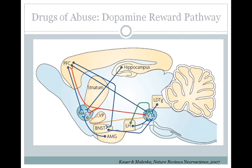Synaptic plasticity is involved in learning, memory, and other normal functions of your brain, but it is also involved in addiction to drugs of abuse. The main area of the brain that seems to be essential for the development of addiction is the dopamine reward pathway. This includes the ventral tegmental area, which sends dopaminergic projections to both the nucleus accumbens and the prefrontal cortex.